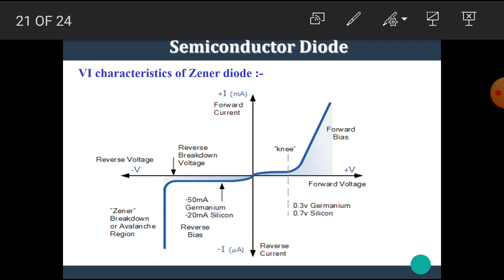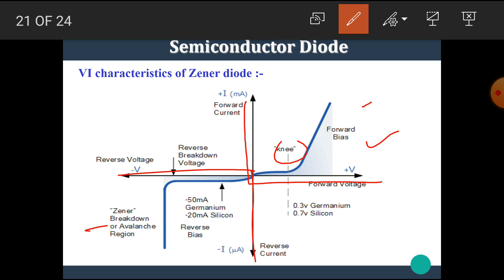Here is the complete view of the VI characteristics of the Zener diode. The forward characteristics part is similar to normal PN junction diode characteristics — the knee voltage is shown, which is the forward voltage at which the diode starts conducting. The reverse breakdown voltage is also shown, which is the reverse voltage at which breakdown occurs. After breakdown occurs, the diode maintains a constant voltage value, which can be adjusted by varying the doping concentration of the P and N materials.